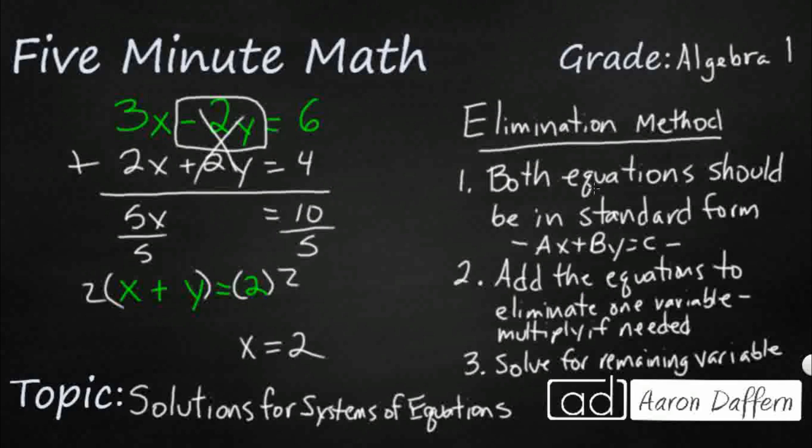So now that I know that x equals 2, all I need to do is plug that into either of the original equations. So let's plug it into this bottom one. This bottom one is going to be easy. It's going to be 2 plus y equals 2. I need to solve for that y. So it looks like y is going to equal 0. So y equals 0.